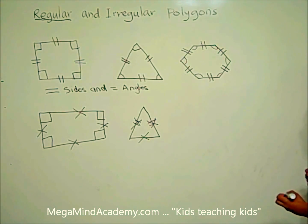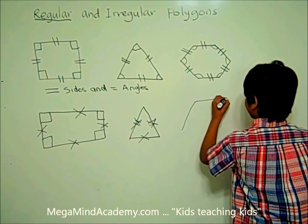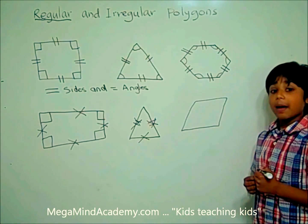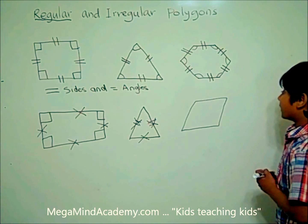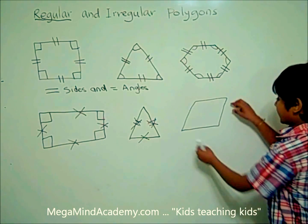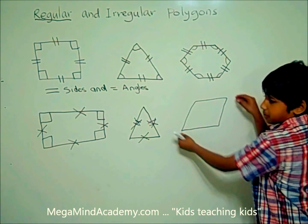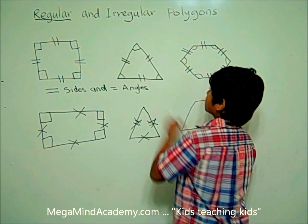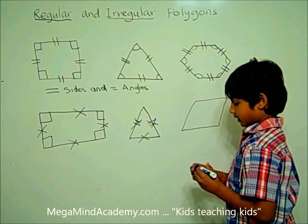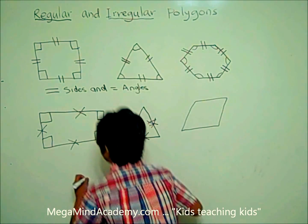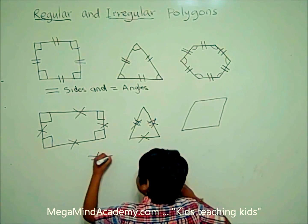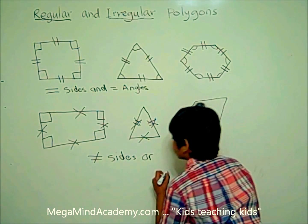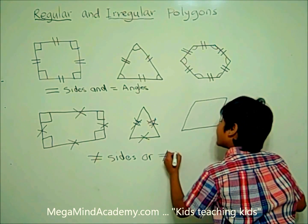What about a parallelogram? A parallelogram may have all the sides which are the same, but all the angles are not the same — like these two angles are obtuse angles, and these two angles are acute angles. These are called irregular polygons. Irregular polygons either do not have equal sides or don't have equal angles.